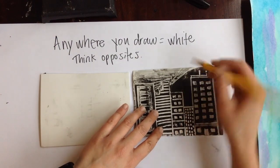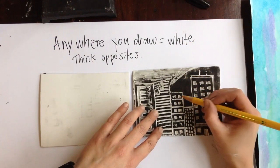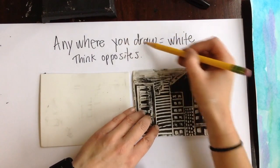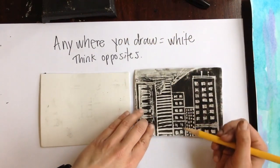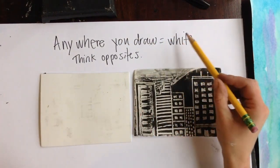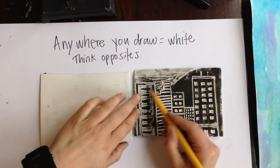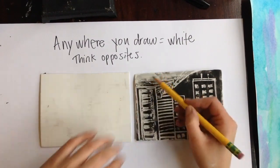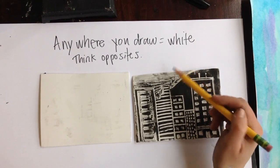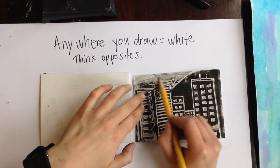So where I drew in here, it ended up being white. These windows I wanted white, so I drew them in. They ended up white. If you want your building to be mostly white, you would draw in a lot of your building. If you want the sky around your buildings to be white, you would draw it in.